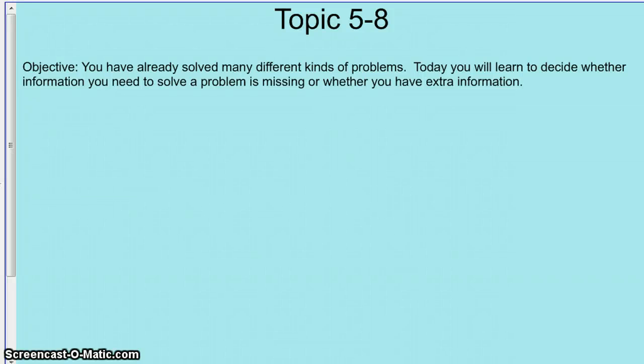5th graders, today we are covering Topic 5.8. The objective you need to write in your math spiral is: you have already solved many different kinds of problems. Today you will learn to decide whether information you need to solve a problem is missing or whether you have extra information. Pause now to write the objective.